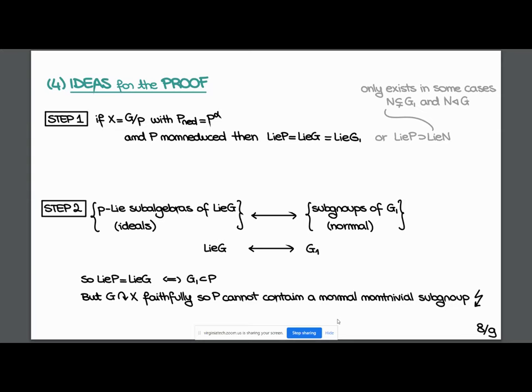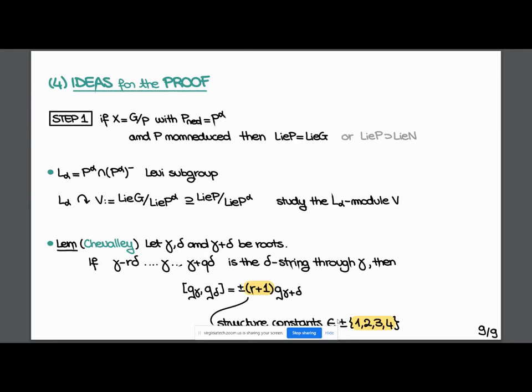A few words on how we prove step one. First, we consider the Levy subgroup of P_alpha. This acts on the vector space given by the quotient of the Lie algebra of G by the Lie algebra of P_alpha. Inside, we have some module given by the quotient of Lie P by Lie of its reduced subgroup. We know this last sub vector space is not trivial because we assume P is not reduced. So we studied this representation. If this is already an irreducible representation, then we are done, but it's not always the case, but it's very concrete—a matrix action on some vector space we can calculate. Five minutes, okay, thanks.